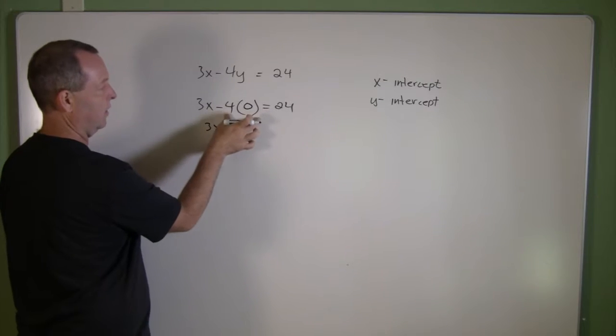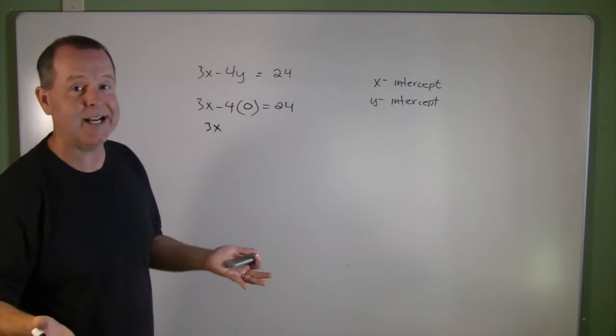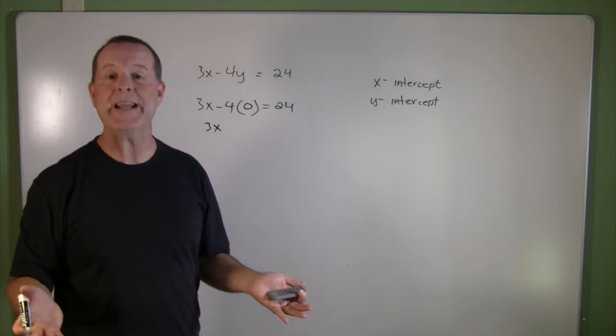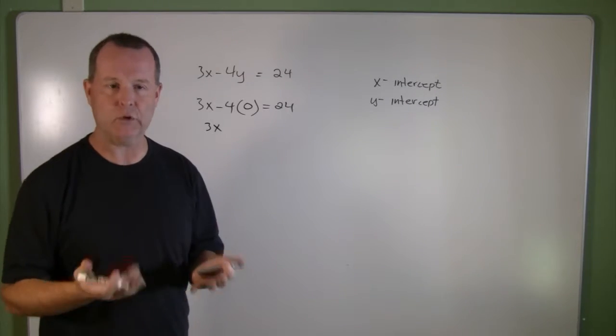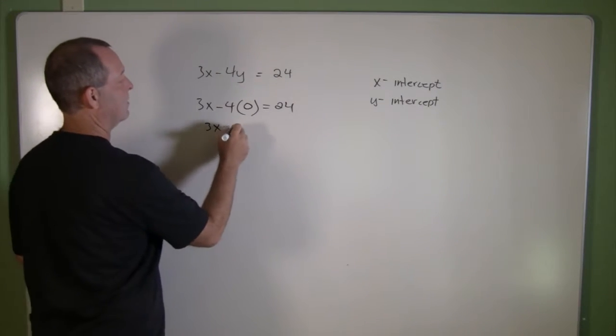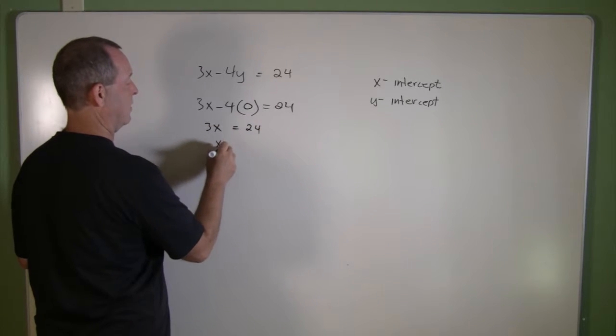3x, and the 0 makes that term go away. It basically cancels out that term, which makes finding intercepts a very powerful tool. This equals 24, so x equals 8.